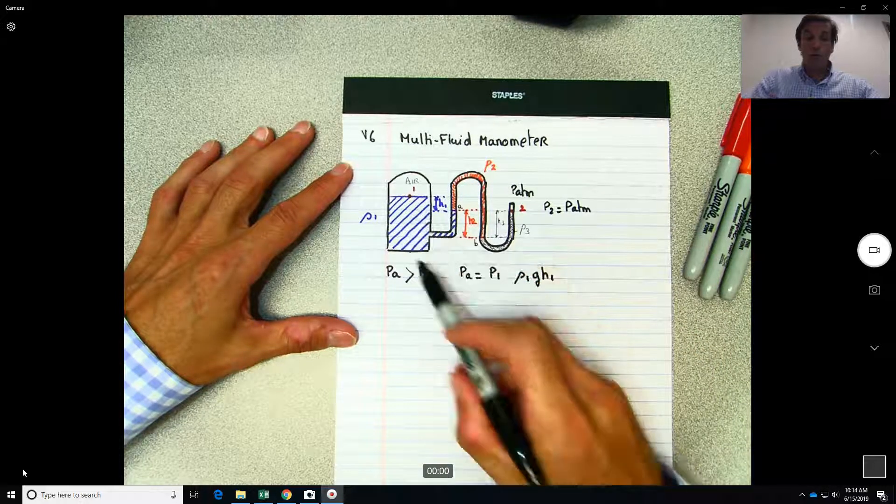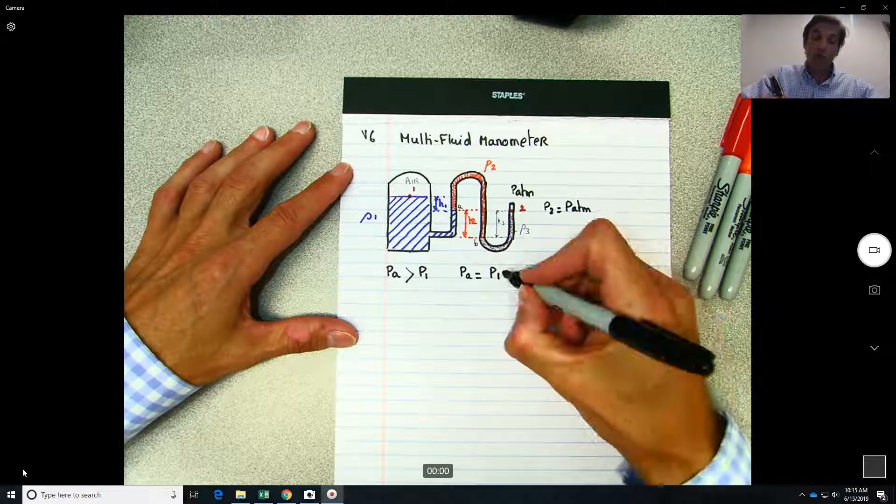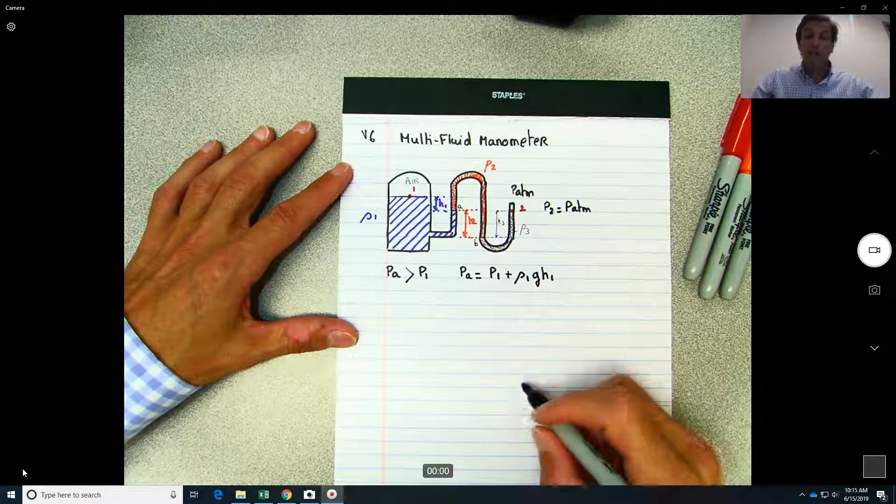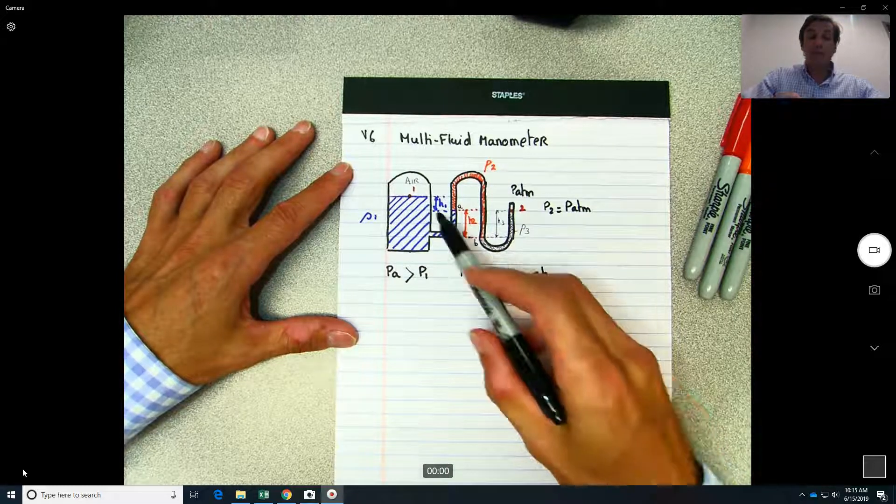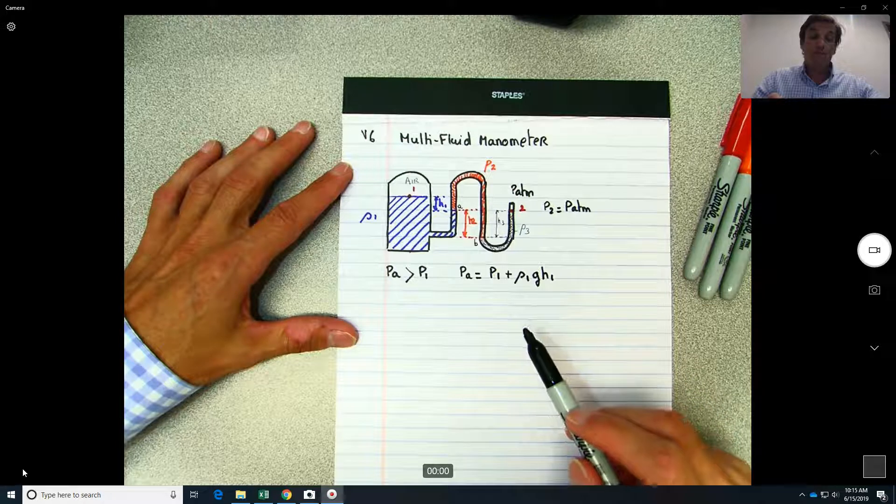And the changing height is h1. So we just say that it is higher, so what you need to put over here is plus. So how much higher it is at PA than point one? The value rho one G h1.